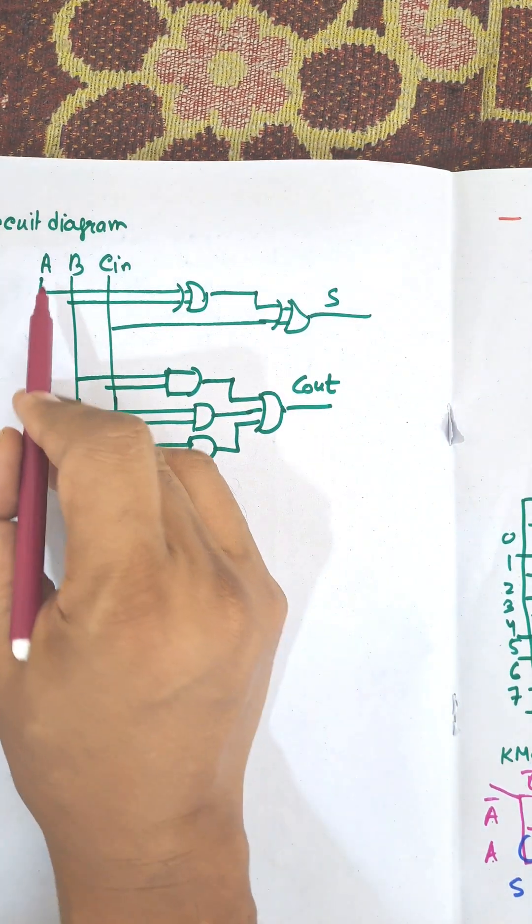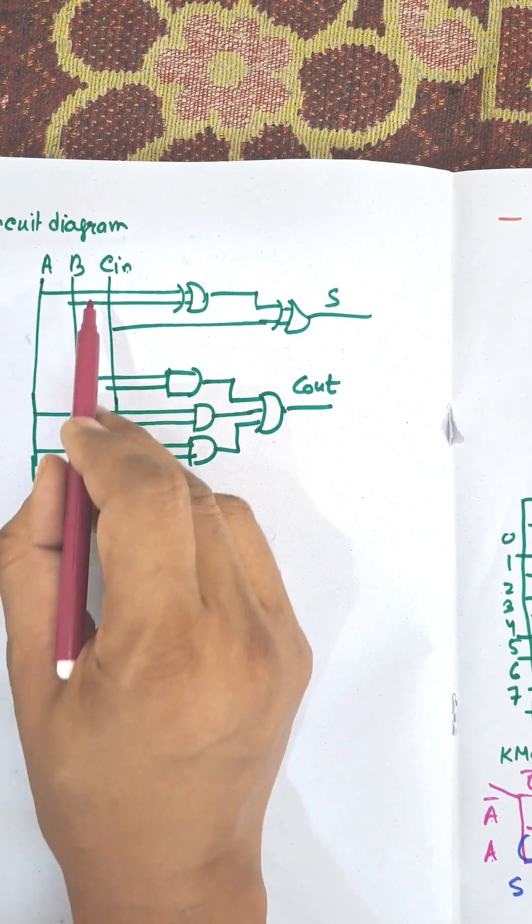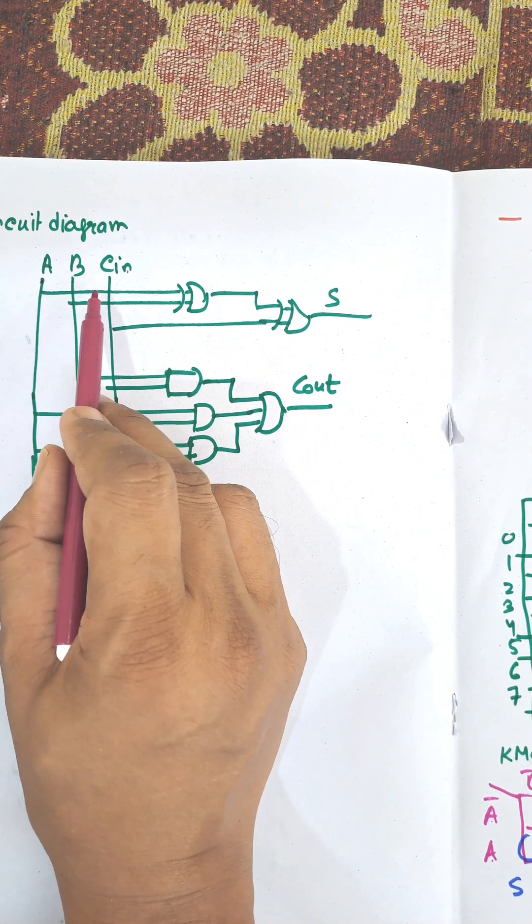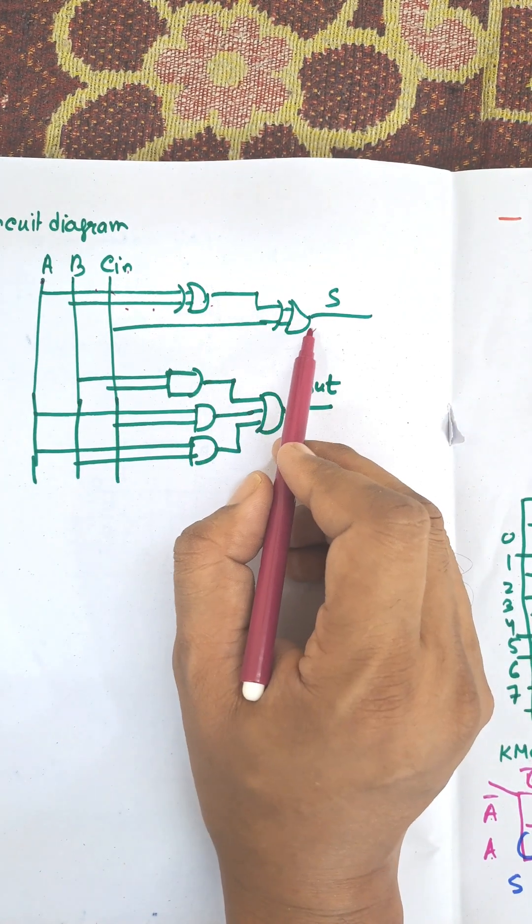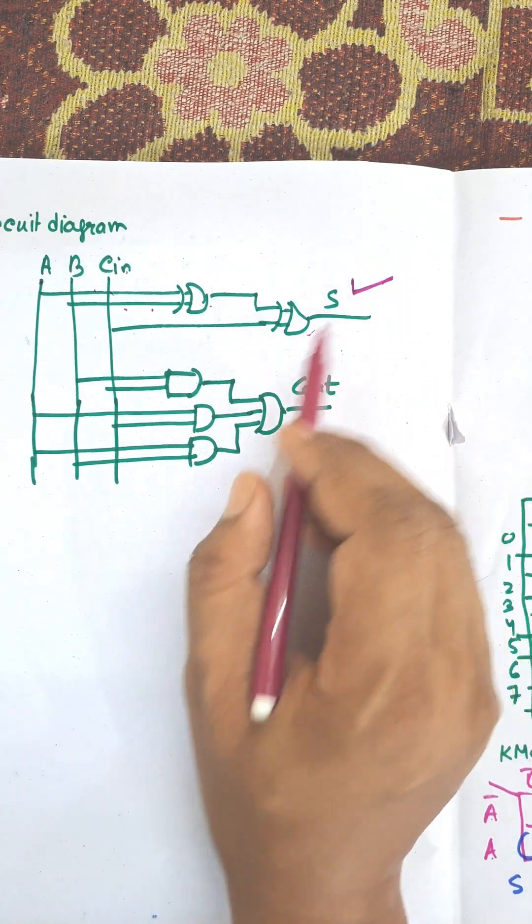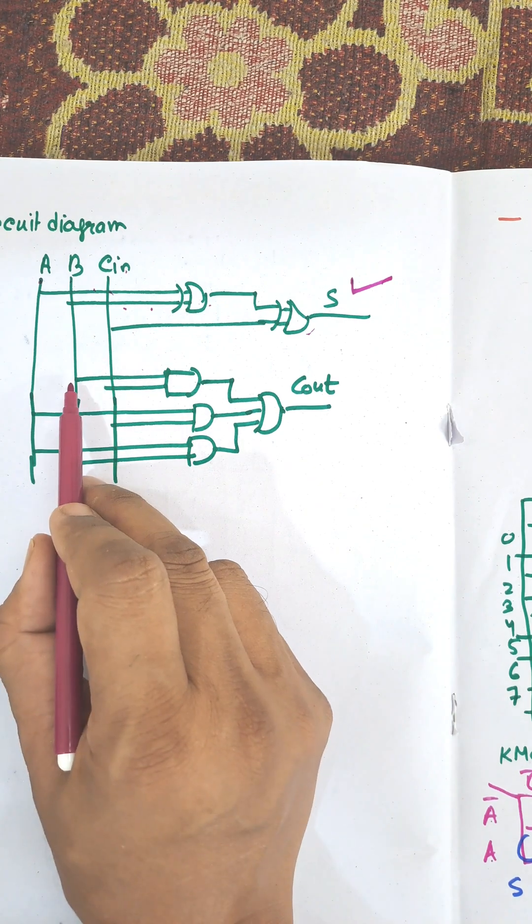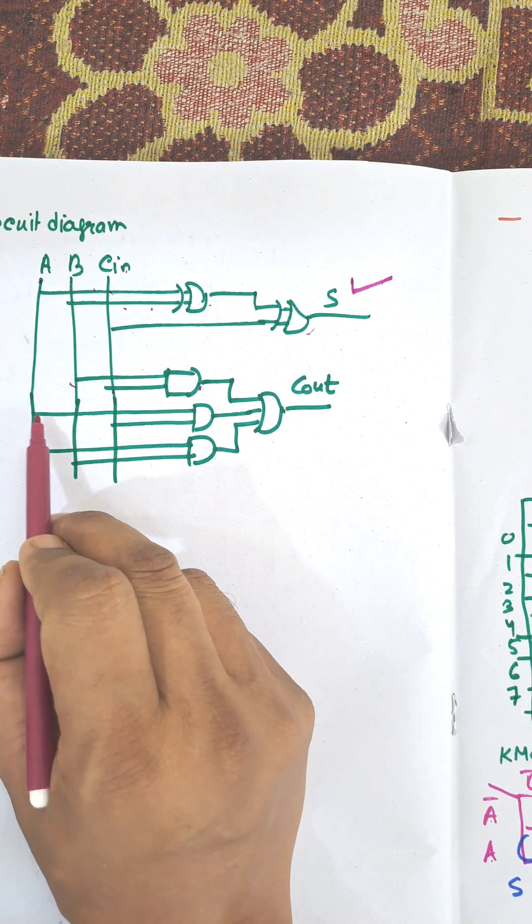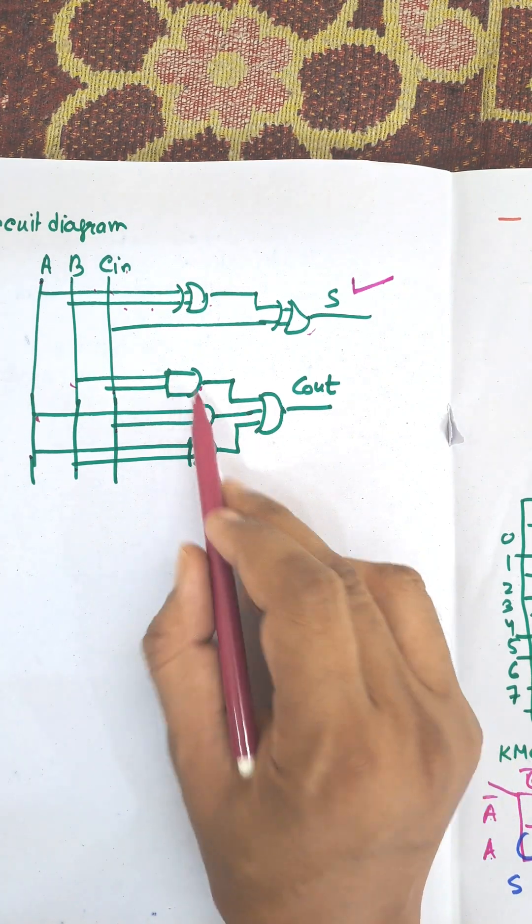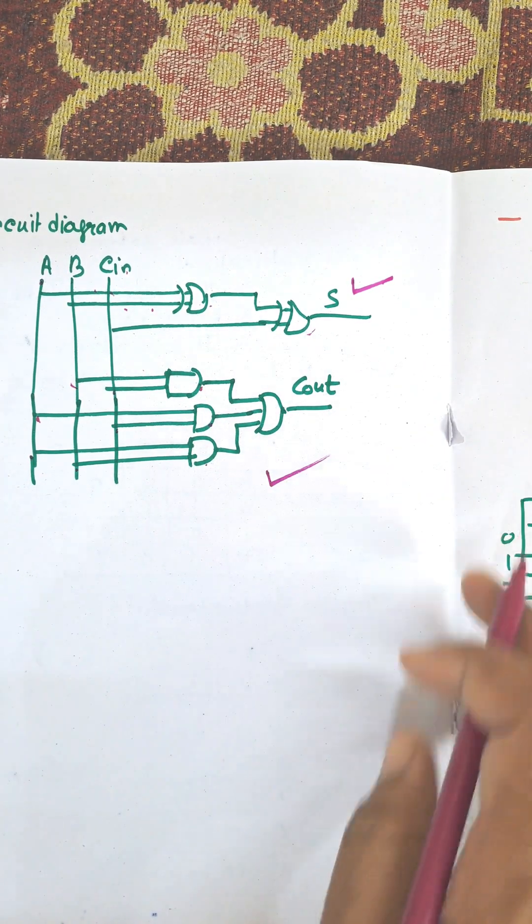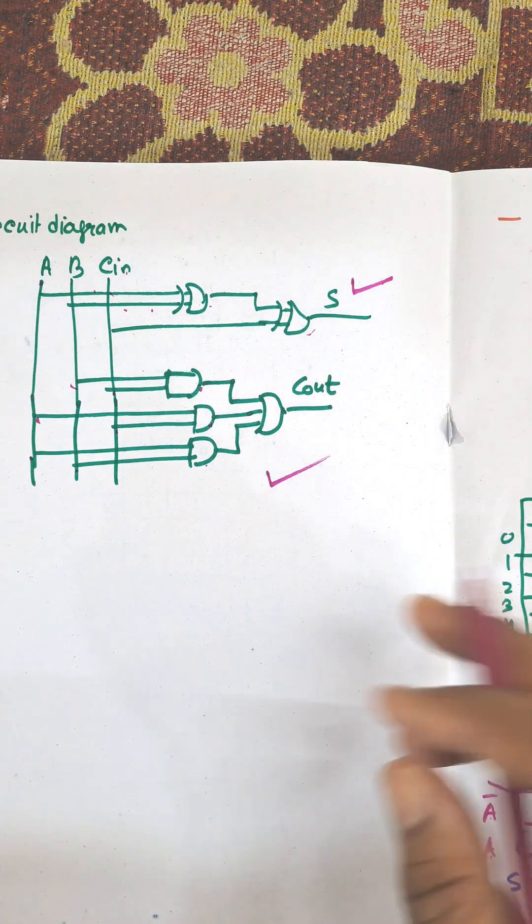Circuit diagram for full adder: A, B, C in are the 3 inputs. First for sum, A and B taking XOR, then XOR with C in. This is the output for sum. For carry, B and C in ANDed, A and C in ANDed, and A and B ANDed, then taking OR of these. This is the output of C out.